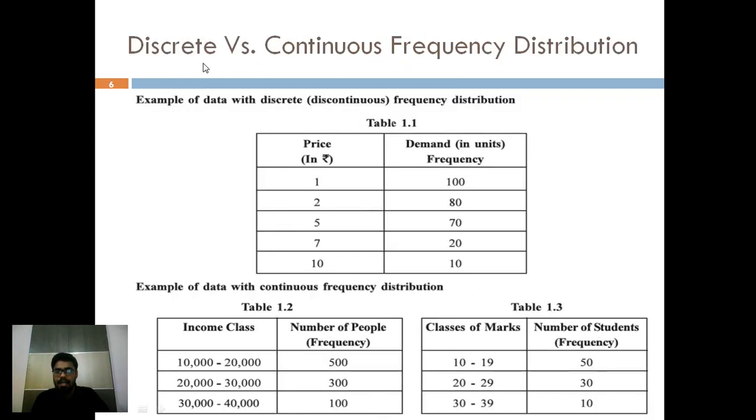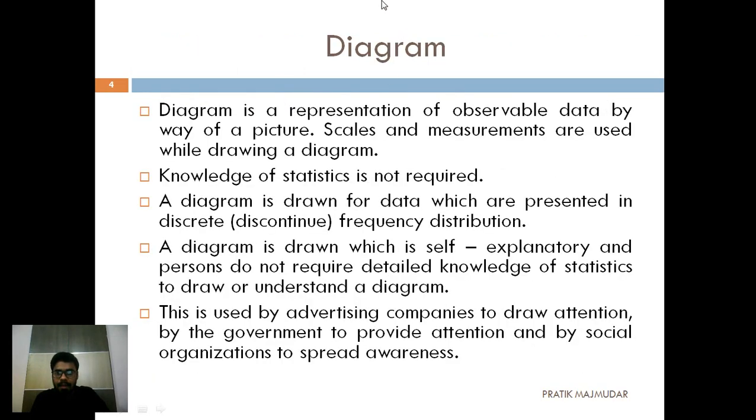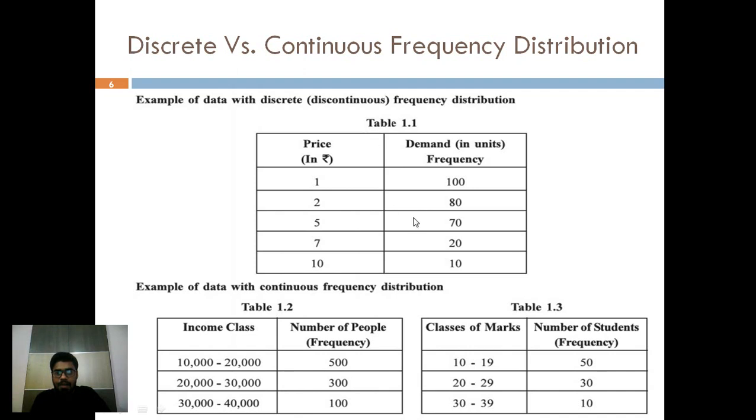Now this is the difference between the discrete, that means discontinue, and continuous frequency distribution. The first table, Table 1.1, which you are seeing, that is a discontinuous frequency distribution. When there was price 1 rupee, the demand was 100. When there was price 2 rupees, the demand has reduced to 80. When the price is 10 rupees, the demand has reduced to 10. There is no continuous frequency - 1, 2, 5, 7, 10. Everything is different. So it is discontinuous or discrete. For this, the best method is the diagram method.